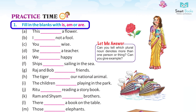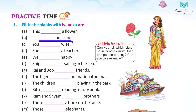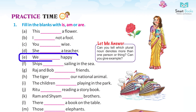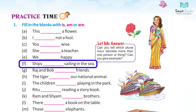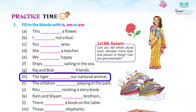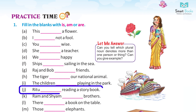Practice Time — Fill in the blanks with is, am, or are. A: This is a flower. B: I am not a fool. C: You are wise. D: She is a teacher. E: We are happy. F: Ships are sailing in the sea. G: Raj and Bob are friends.